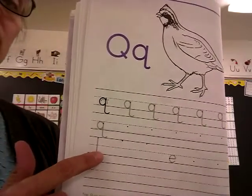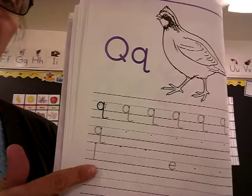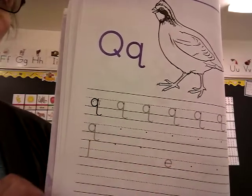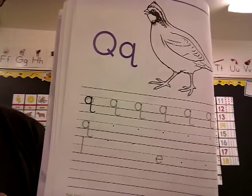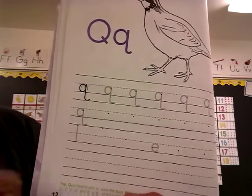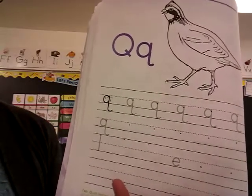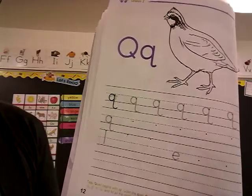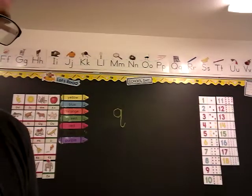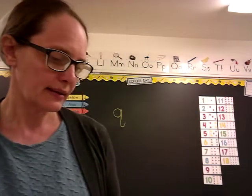And then you get to do some practice L's — remember that's just a straight line down. And then some E's. And then when you're done with that, we'll do the sounds on the bottom line. I will say a sound and you'll write the letter that makes that sound.